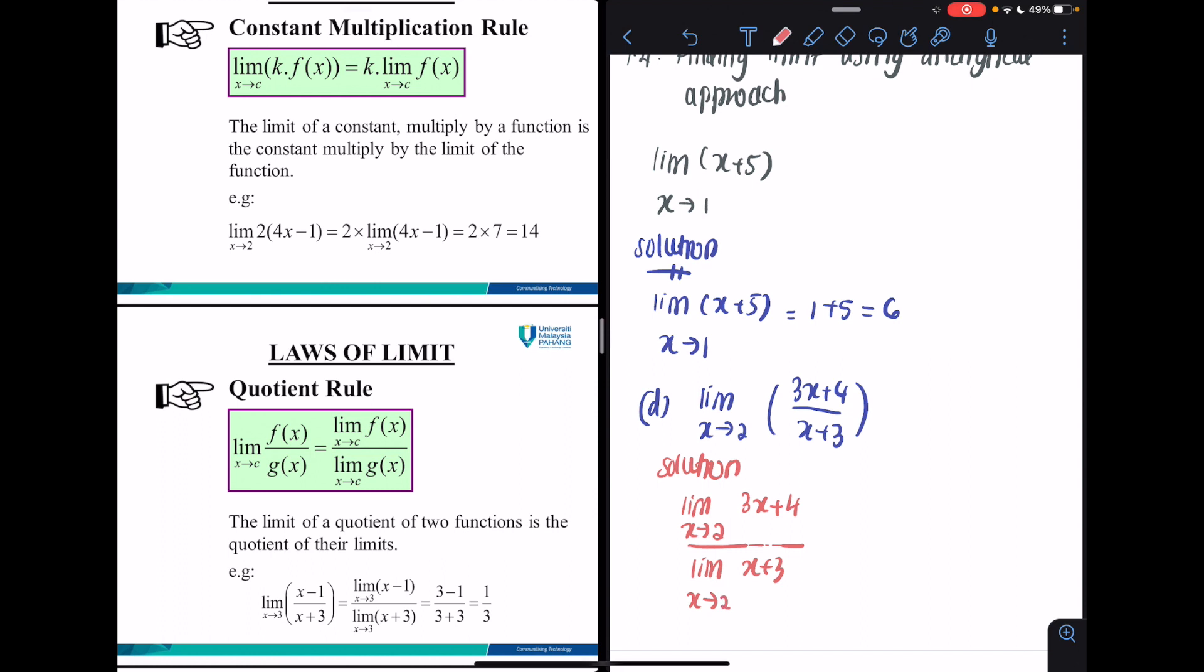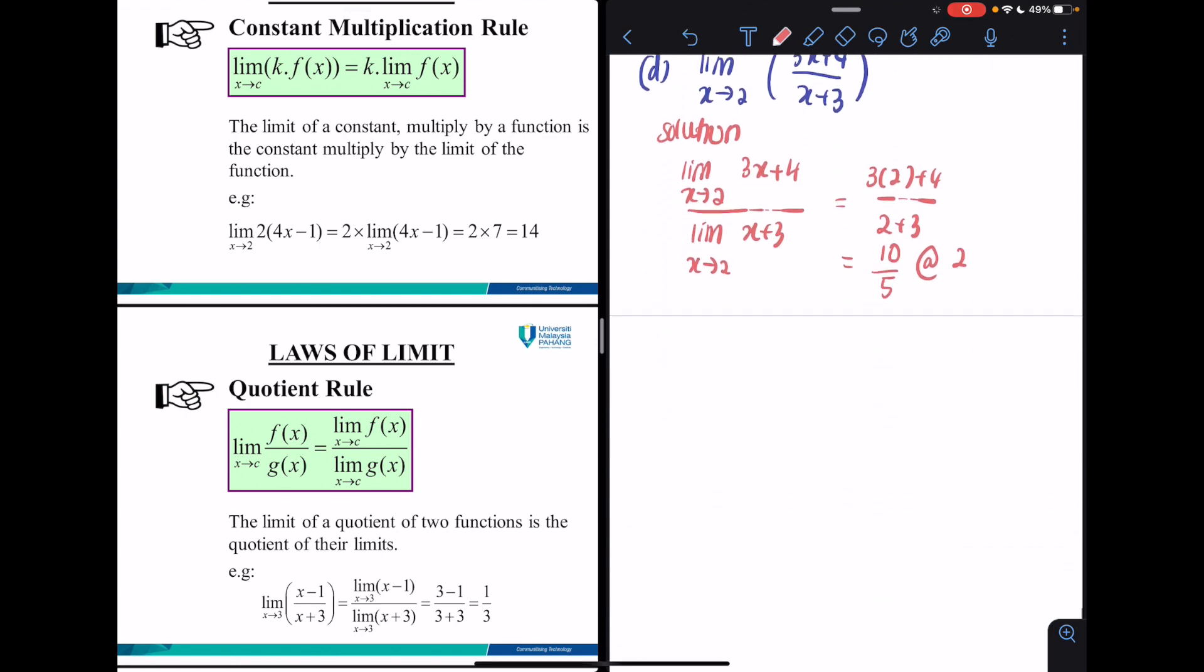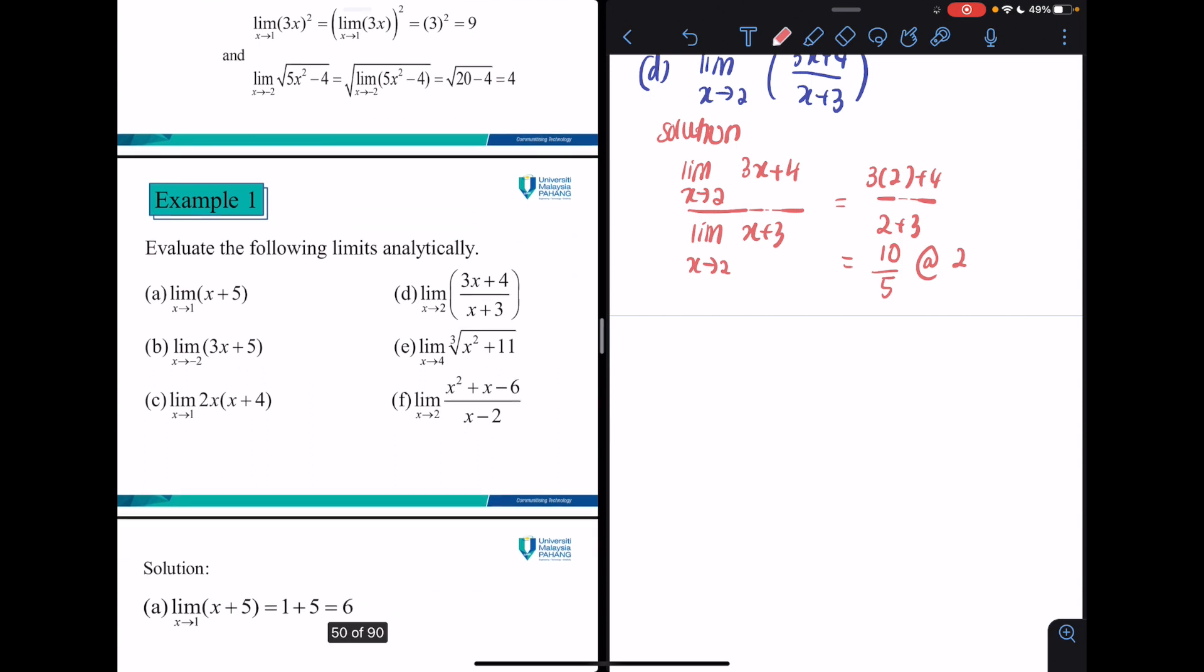I will get 3 times 2 plus 4 over 2 plus 3, which is 10 over 5, or equal to 2. How about question number c?